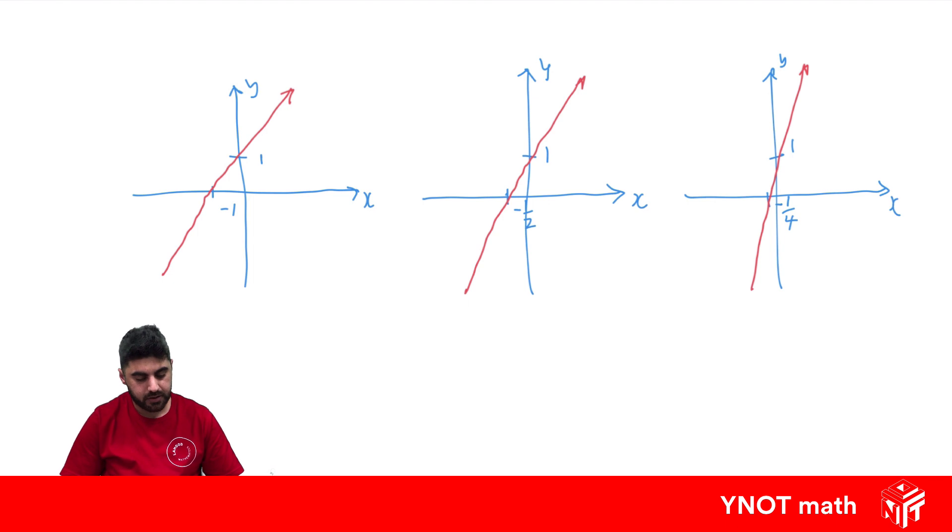So what's the difference between these lines here? Well, they all go through y equals 1, but they're going through different values of x. And what's happening to the line? The line is getting steeper. It's becoming more vertical. And this is what we call the gradient of a line.